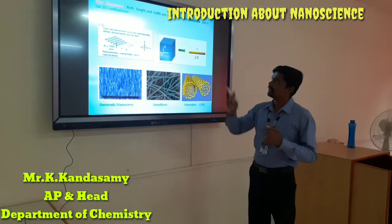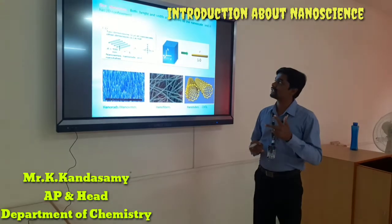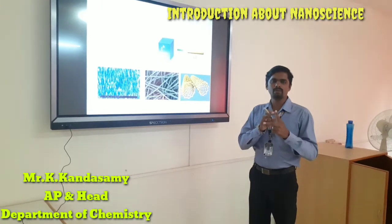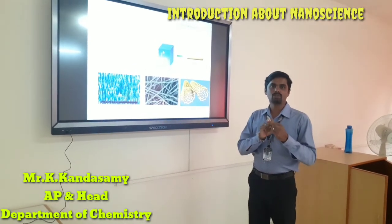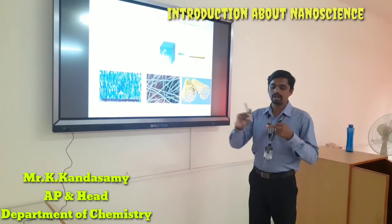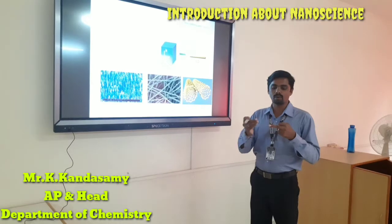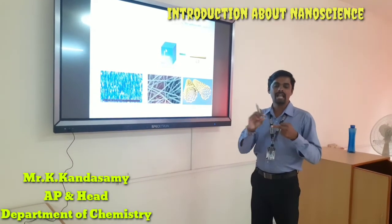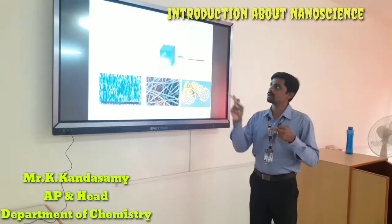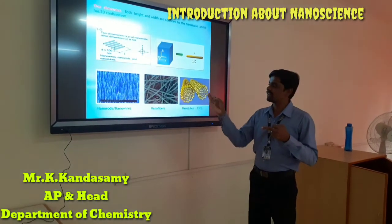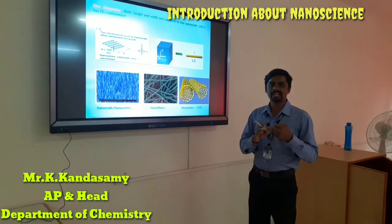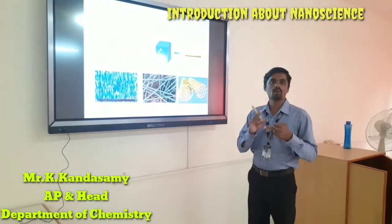Going to one-dimensional materials — one-dimensional means the height as well as the width are confined, forming one-dimensional nanomaterials. That means only the length of the particle is free. Like, we produce nano rods, nano tubes, and nano wires. These are the one-dimensional nanomaterials — famous examples include nano fibers, nano rods, and nano wires.